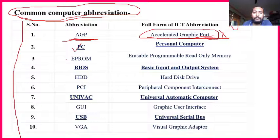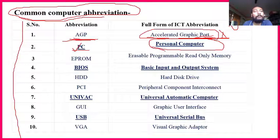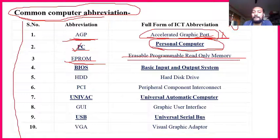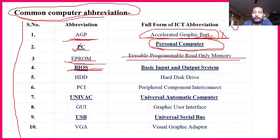PC stands for Personal Computer — short form PC. EPROM — Erasable Programmable Read Only Memory — already discussed; it can be erased if you want to delete. BIOS is very important — Basic Input and Output System. We are learning about input and output devices; inside each device there is a system.